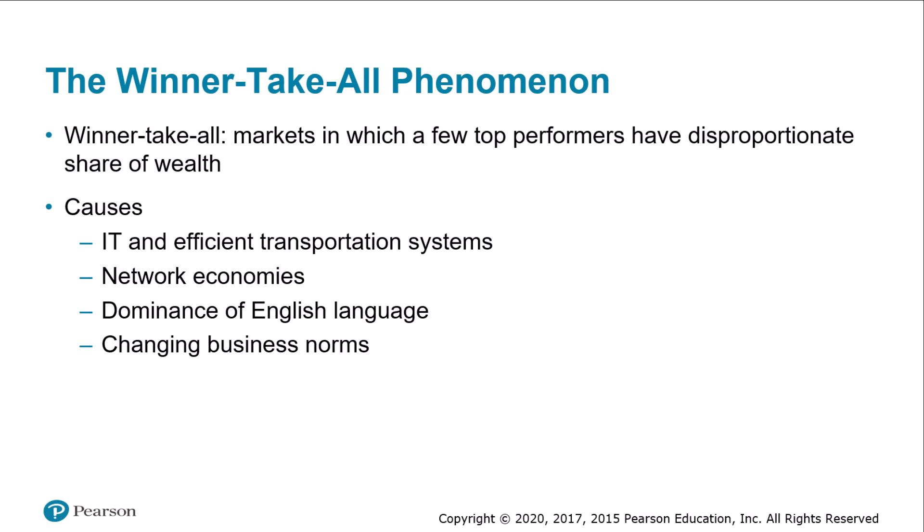Third, English has become the de facto language of international business. English is the native language in 12 countries including the United States, and another 56 countries teach English in their schools, making it easier for products to find a worldwide market. Fourth, business norms have changed — in the past, large businesses promoted from within and didn't recruit executives from other firms, but today firms vigorously compete with each other for top executive talent.